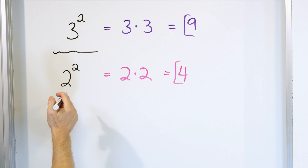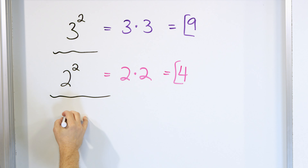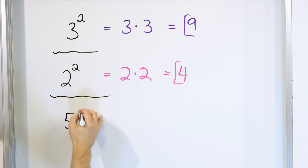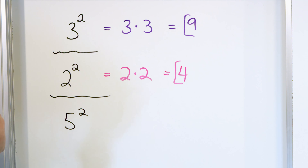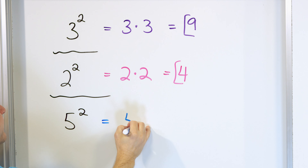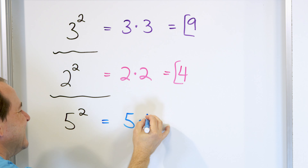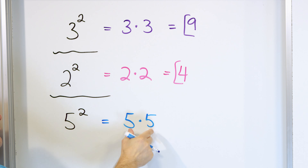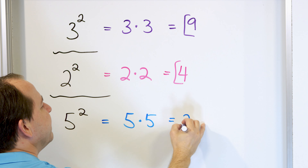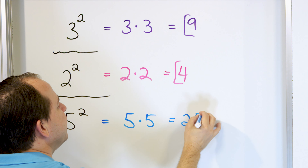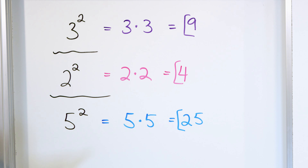Let's take a look at another power of 2: 5 to the power of 2. How would we write that down? We're always multiplying by itself. So it's 5 multiplied by itself. The number of times we multiply by itself is what the exponent is, and 5 times 5 is 25. So we say that 5 to the power of 2 is 25.